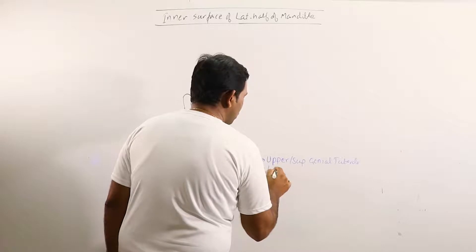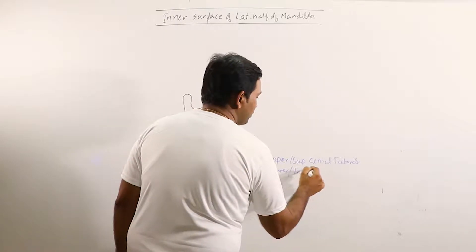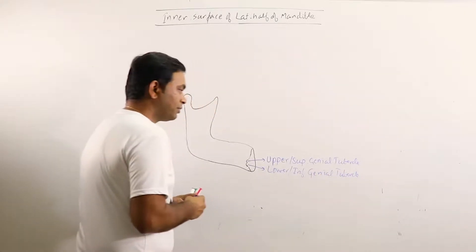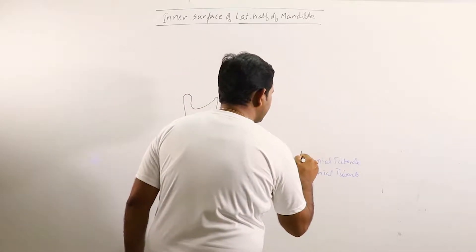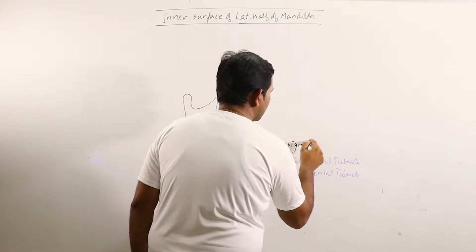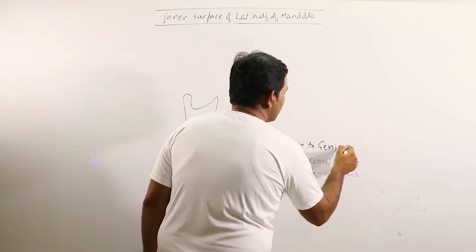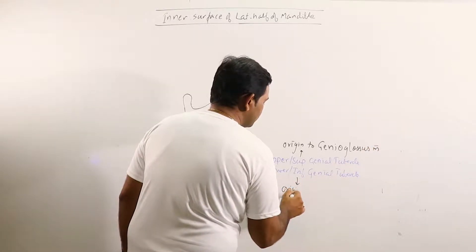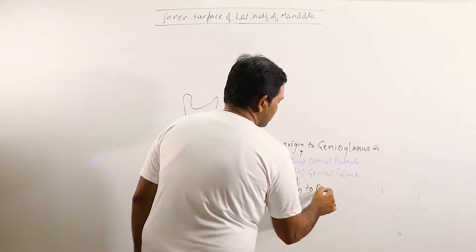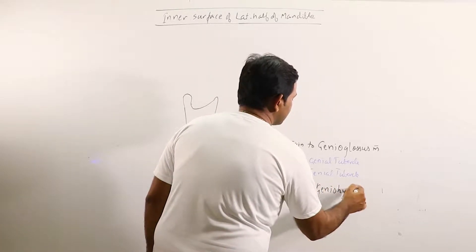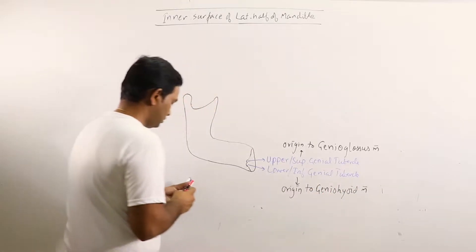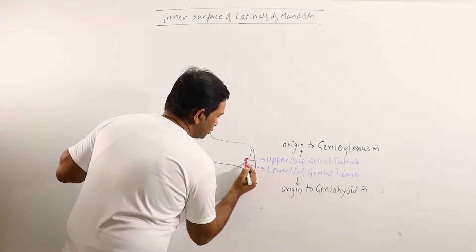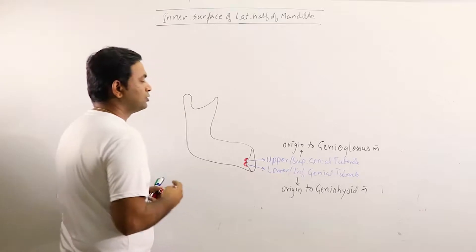This is lower or inferior genial tubercle. The upper genial tubercle gives origin to genioglossus muscle while the lower one gives origin to geniohyoid muscle. So this is the origin of genioglossus and this one is the origin of geniohyoid muscle.